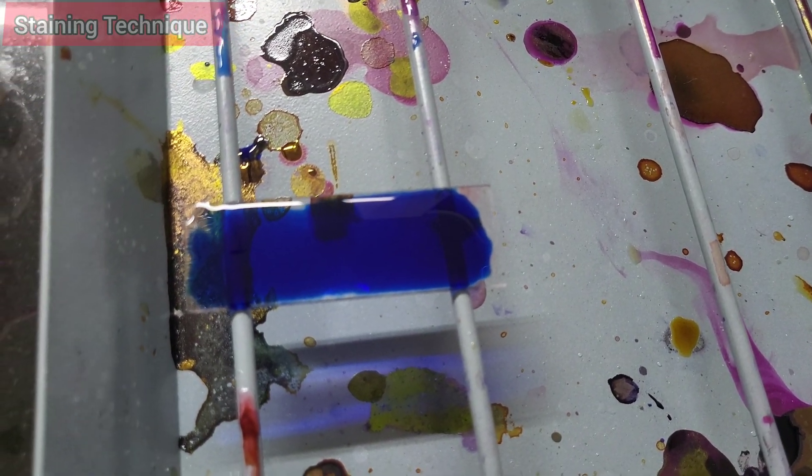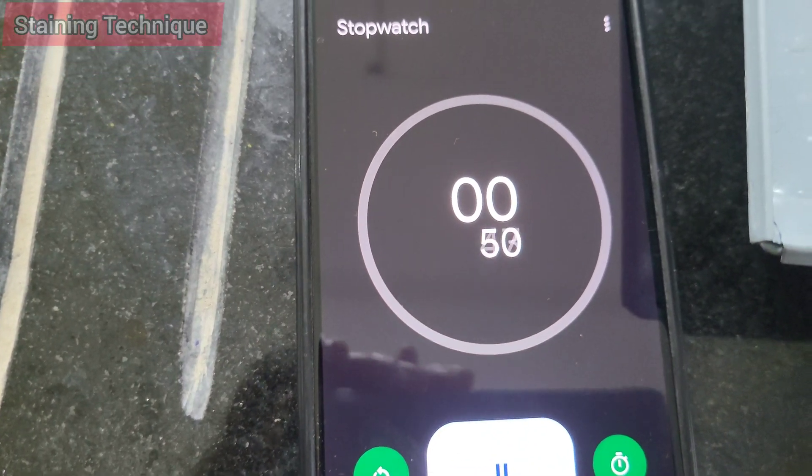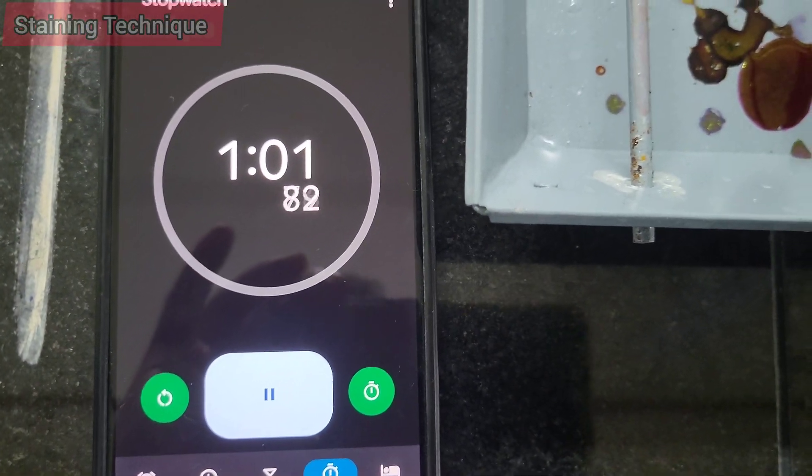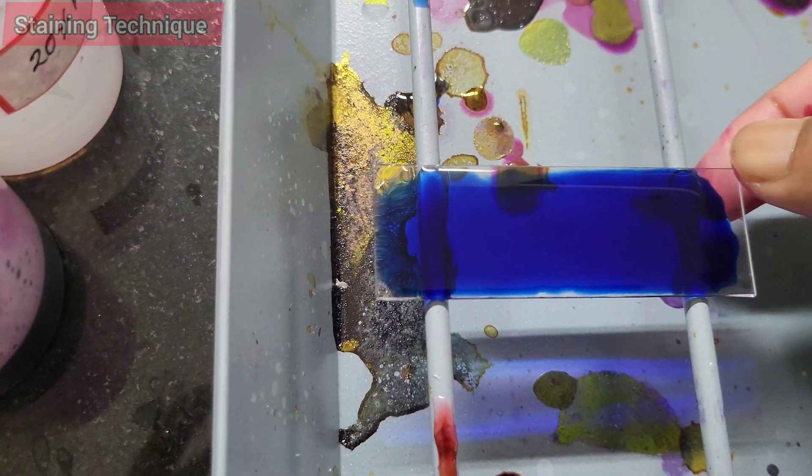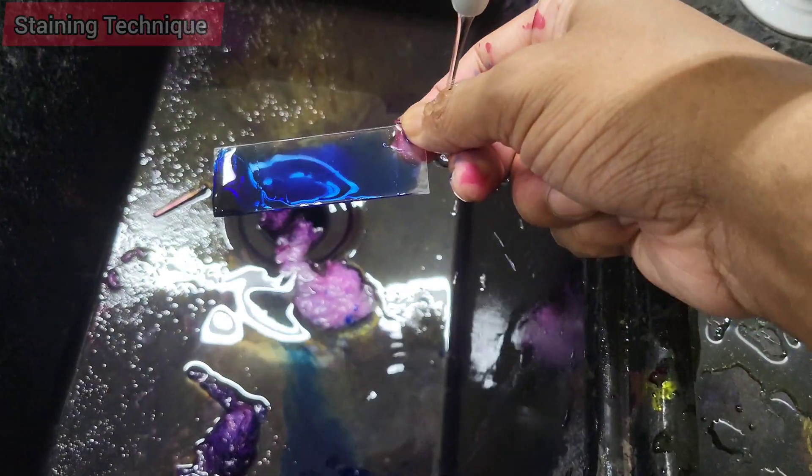What are the limitations of Ziehl staining? Low sensitivity in paucibacillary cases and cannot differentiate between viable and non-viable bacilli. What is the sensitivity of Ziehl staining for TB? Around 50 to 60%. What is the specificity of Ziehl staining for TB? It's high as few organisms are acid-fast.